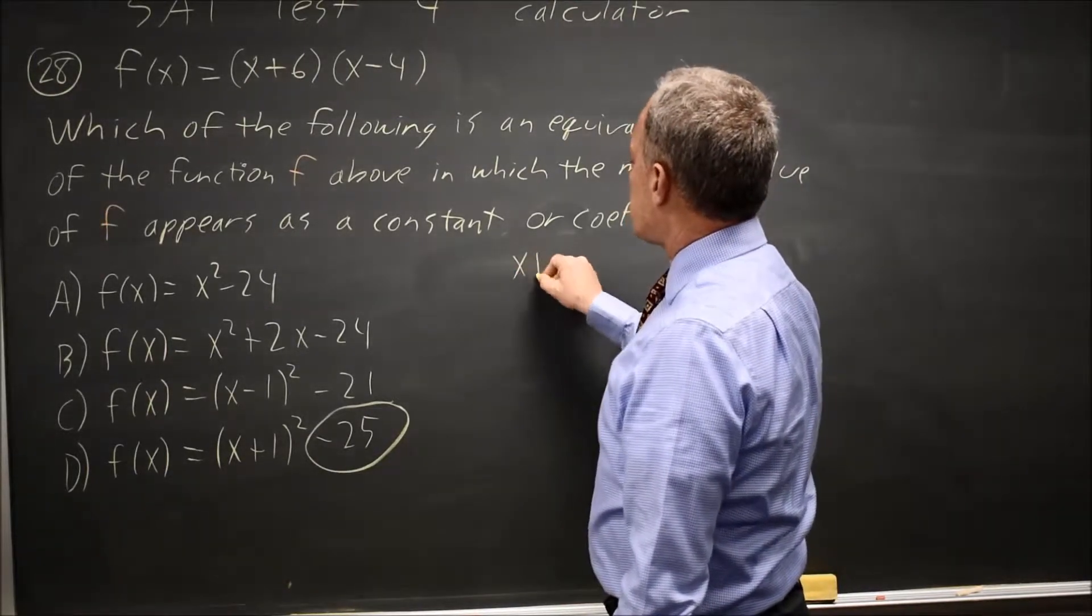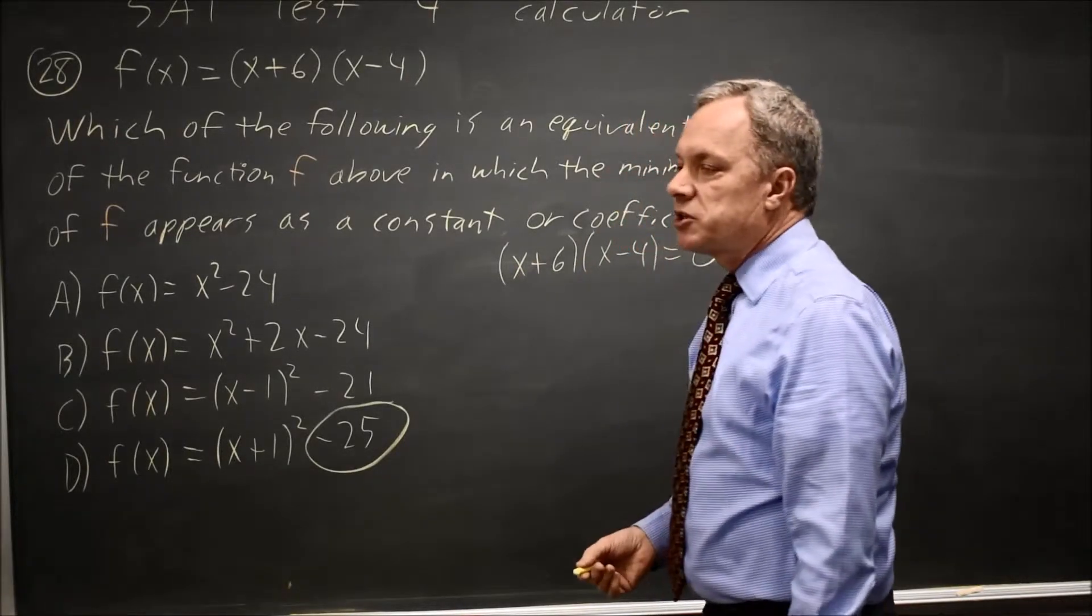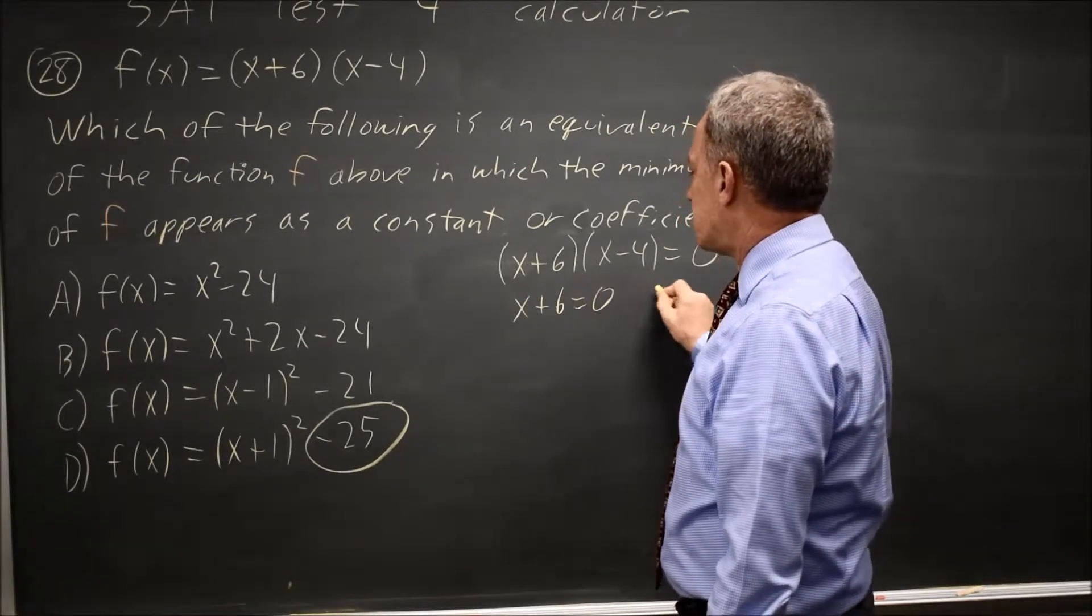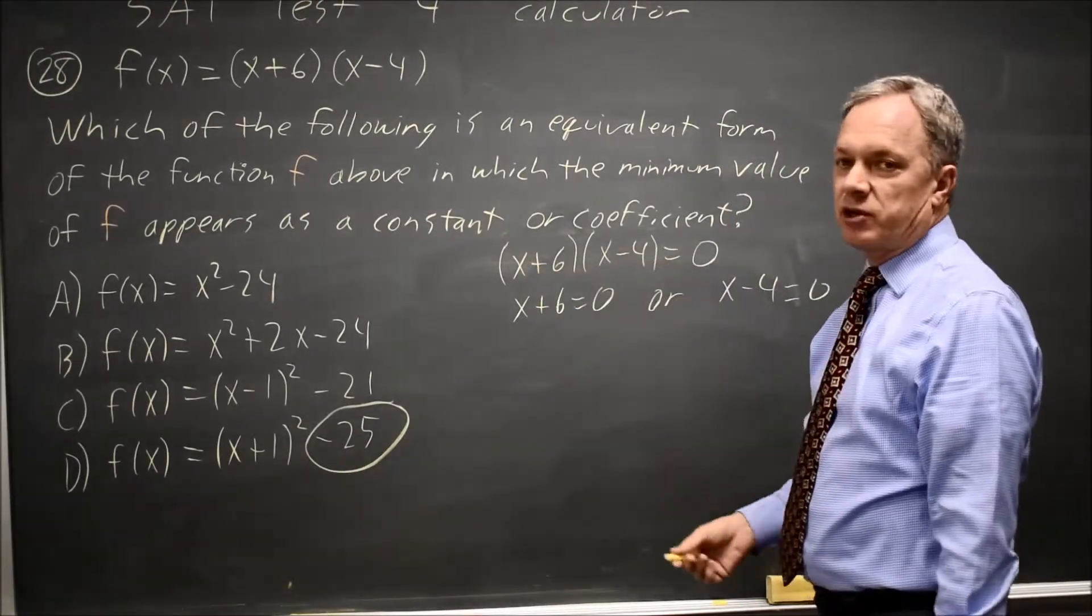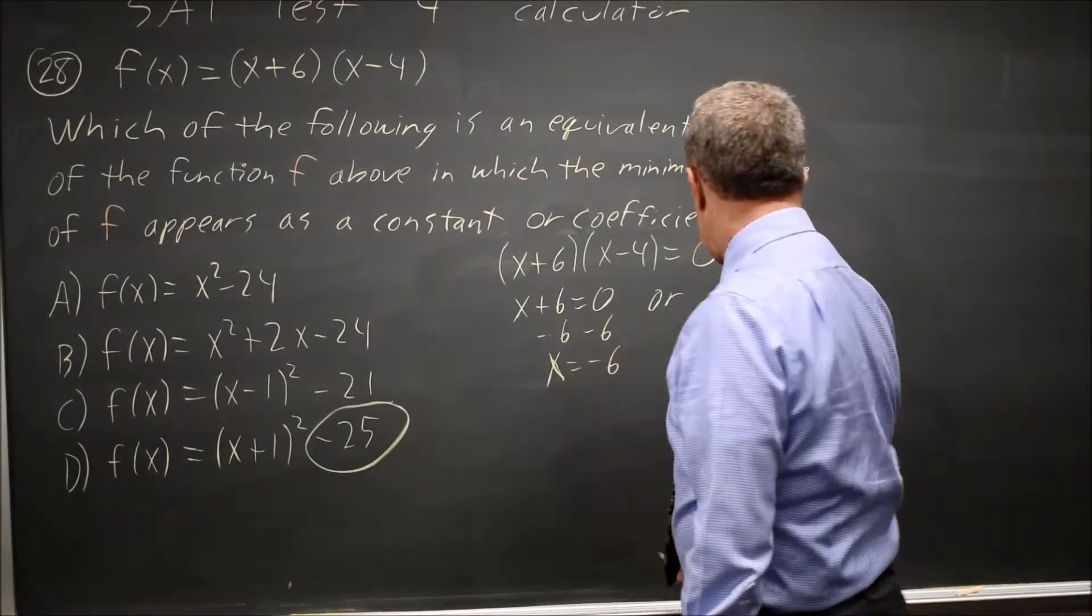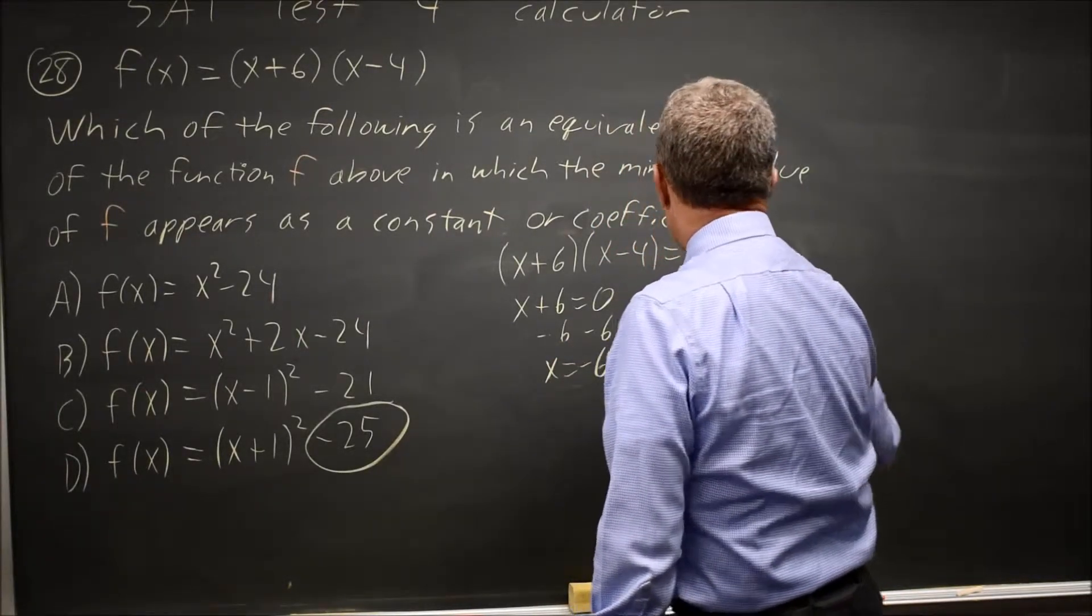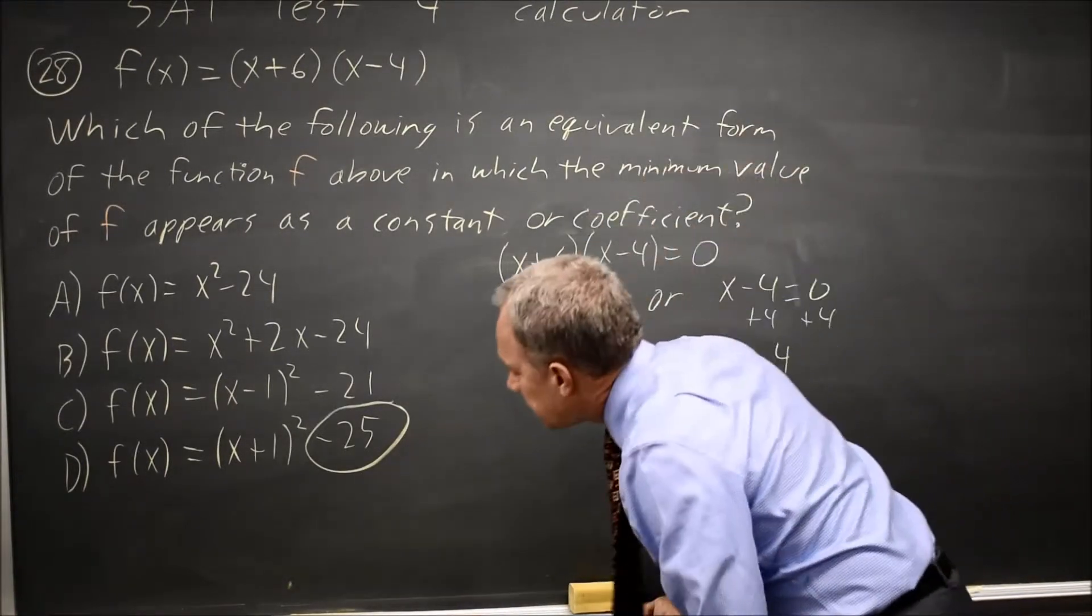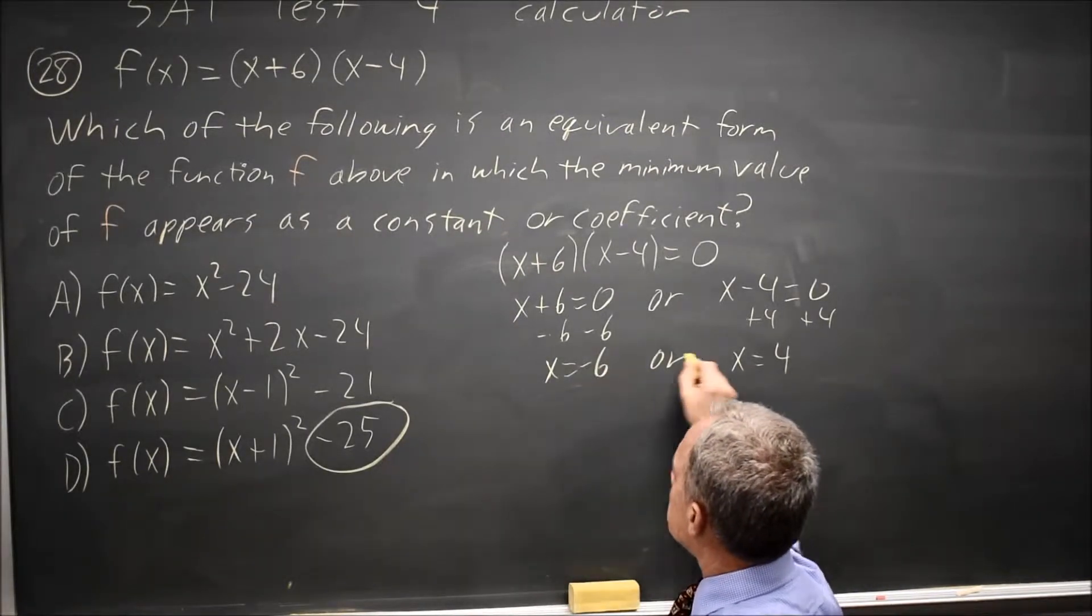But let's look at X plus 6, X minus 4 equals 0. That gives me the two zeros of the function. If a product equals 0, either the first factor equals 0 or the second factor equals 0. That gives me X plus 6 equals 0 or X minus 4 equals 0. Solving X equals negative 6. The X coordinate at the vertex is midway between the two zeros of the function. These are the zeros of the function.